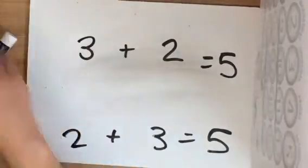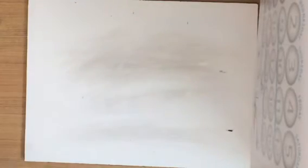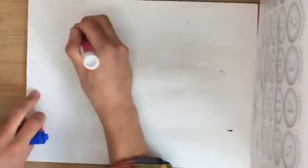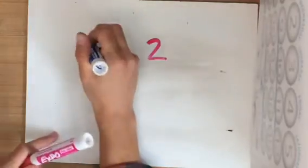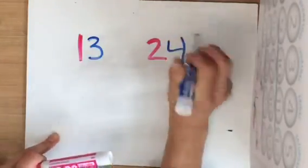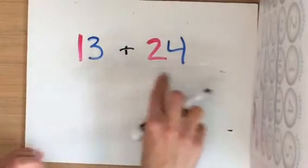The same thing happens when I'm doing two-digit numbers. And this is where it gets tricky. I'm going to do my 10s in pink and my 1s in blue. So I have 1, 2, 3, 4. In this question, I have 13 plus 24.